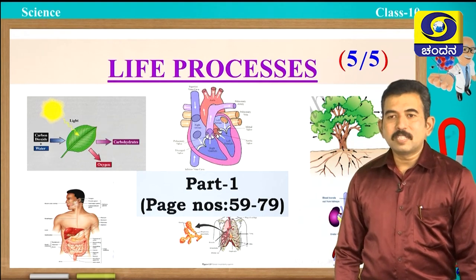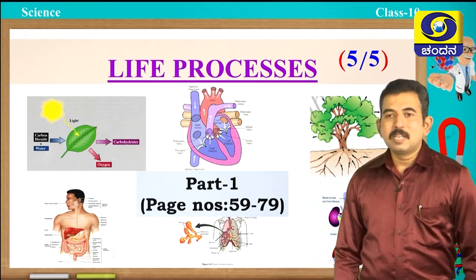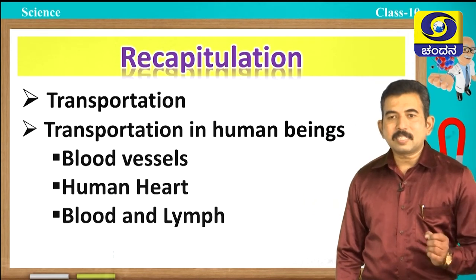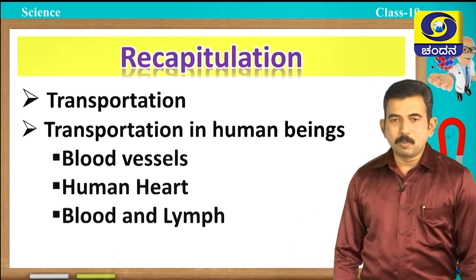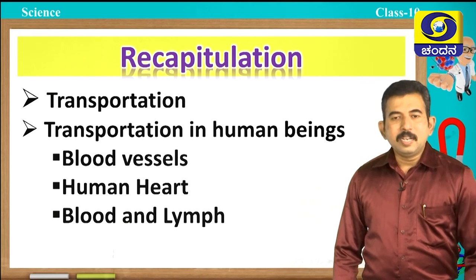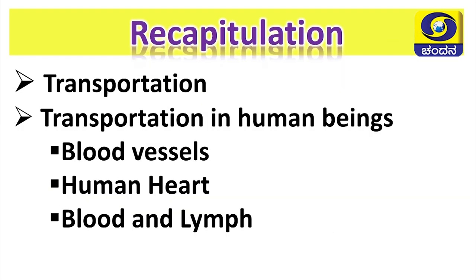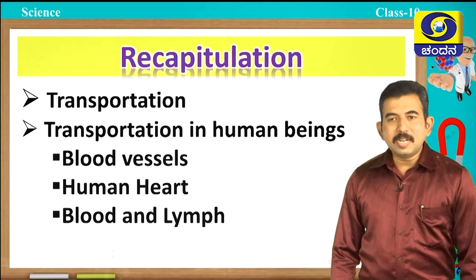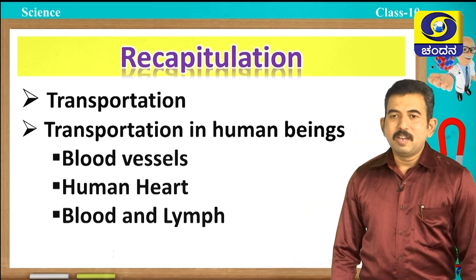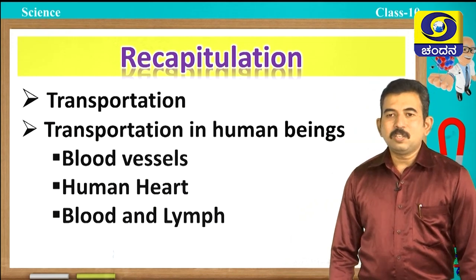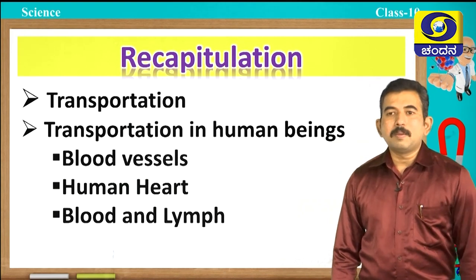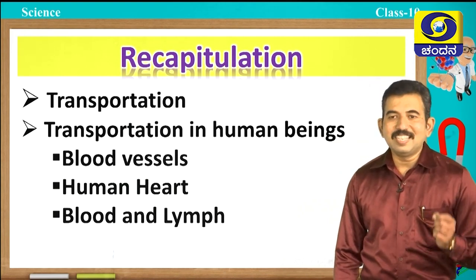Let us recall first what we have learned in the last class. In the last class we discussed the transportation process, and in detail we studied transportation in human beings, blood vessels, different types of blood vessels and their functions, human heart, circulation of blood in the heart, and also blood and lymph.